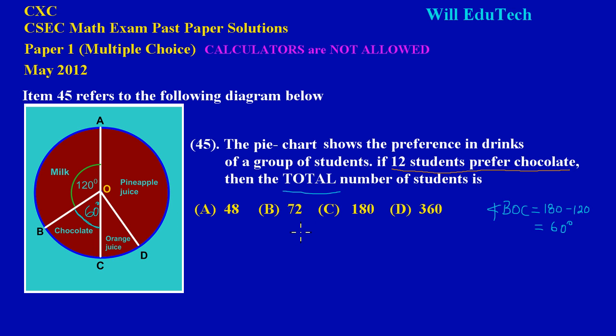Now we can use this piece of information to calculate the total amount or the total number of students in the survey, because this is essentially saying a fraction of this pie chart, a slice of it, prefers chocolate and that number of students who prefer chocolate is 12. So I need a fraction which is 60 out of 360. And why 360? Because angles at this complete point, all of this, all the angles that are at this point O would sum to 360.